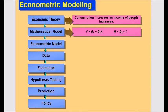Y is consumption expenditure, and X is income, whereas beta 1 and beta 2 are known as parameters of the model.